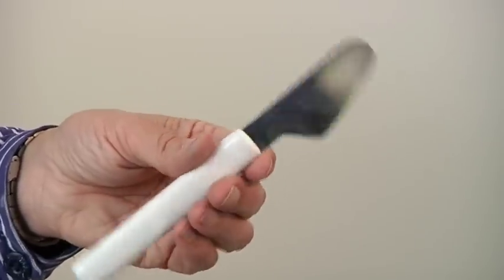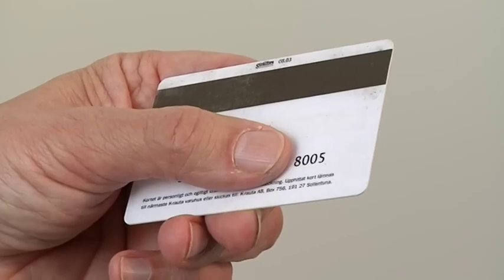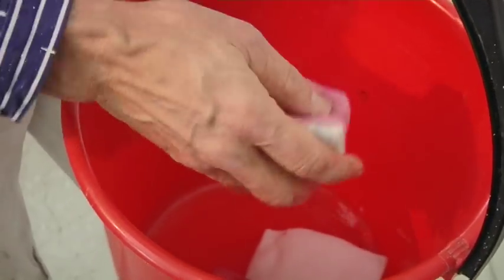You can use a household knife, any membership card, and you also need a sponge when you put on the putty.